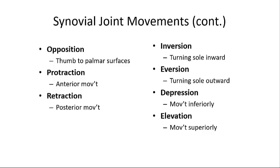There are more types of synovial joint movement. Opposition is the movement of the thumb toward the surface of the palm or the pads of the fingers — like when you're snapping your fingers. Protraction is moving a body part anteriorly in the horizontal plane; retraction is the opposite, moving a body part posteriorly. Inversion is a twisting motion of the foot that turns the sole inward, elevating the medial ridges. Eversion is the opposite — turning the sole outward. Depression is when a structure moves inferiorly, like opening the mouth; elevation is when a structure moves superiorly, like closing the mouth.